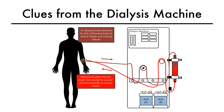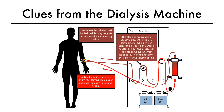Dialyzed blood, denoted by bright red, leaves the dialyzer at the venous end and enters back into the axis via the venous needle, which is placed proximal to the arterial needle in the arm. The rotation of the blood pump creates a negative pressure in the pre-pump arterial tubing, which helps pull blood via the arterial needle, and a positive pressure in the post-pump tubing, which helps to push blood into the dialyzer and back into the body via the venous needle.